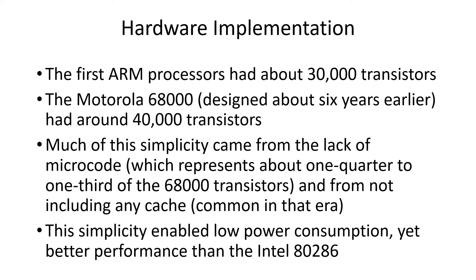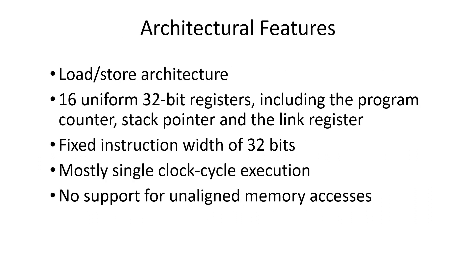With fewer transistors, it managed to use less power than the 68000 or the Intel 286 processor. The ARM is a RISC machine. It uses a load-store architecture such that only two instructions — load and store — go out to memory. The rest of the instructions have their operands in the registers.